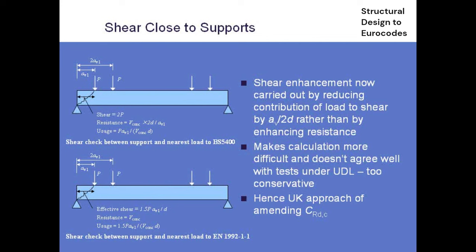The shear enhancement approach is a bit different in the Eurocode. In the past with BS5400, and the way the UK National Annex has been fudged by putting 2D/AV into CRDC, we've basically calculated the shear force and then enhanced the resistance by a factor 2D/AV. That's what the UK National Annex is telling you to do.